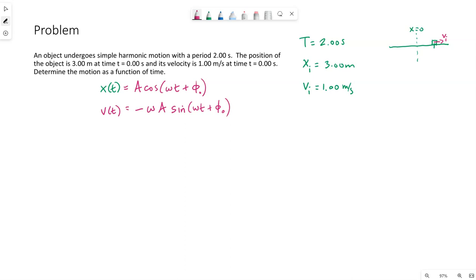Alright, so we have quite a few unknowns here. Period, if you remember, omega is two pi f, but f is one over period. So we know that omega is two pi over T, two pi over the period. So we know in this case the period is two, so omega is pi. So we do have that one value.